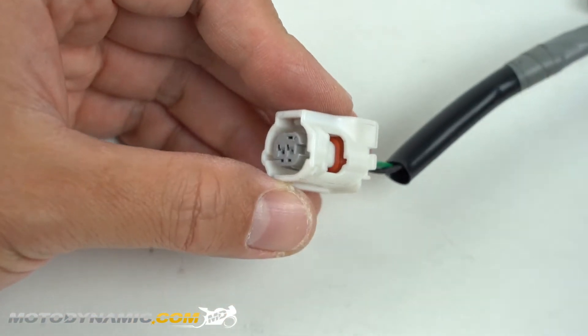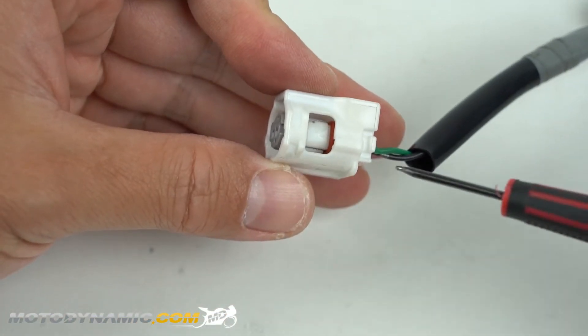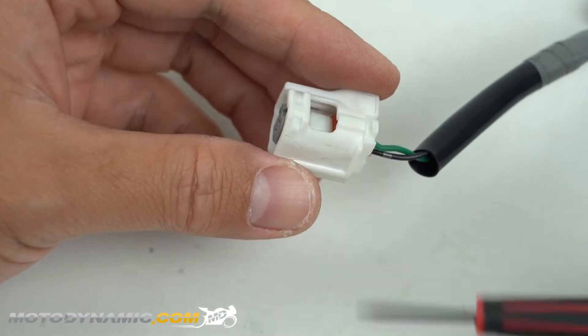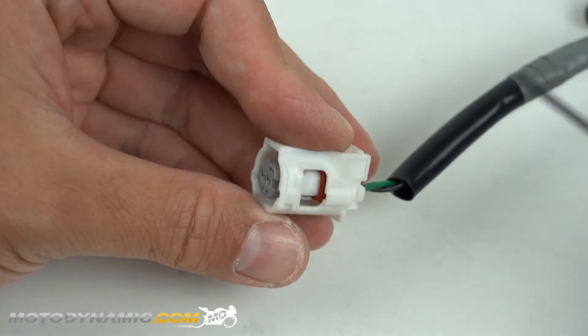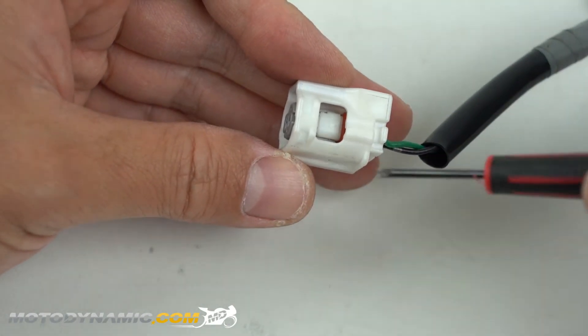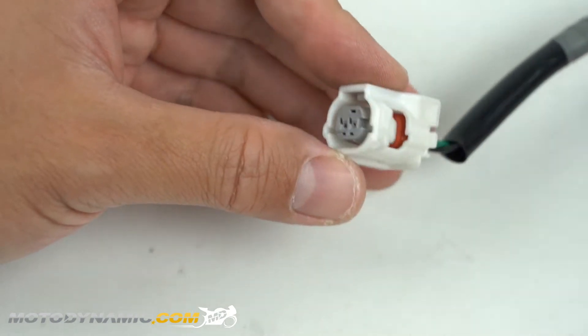Today we're going to be walking you through how to d-pin a Sumitomo TS-025 series connector. These are commonly used for Yamaha turn signals, typically found on the late model R1s, R6s, and MT-07 and MT-09 series motorcycles.